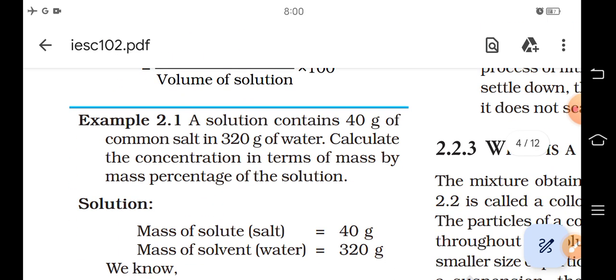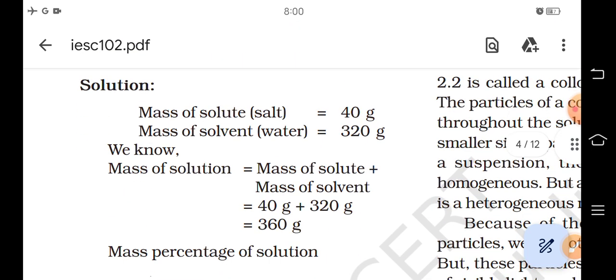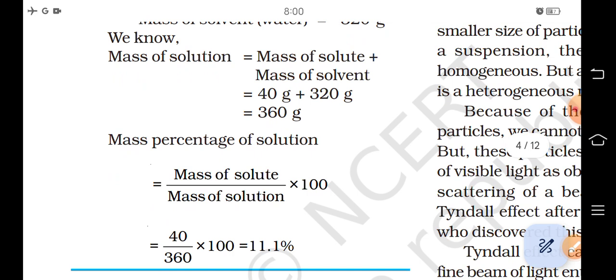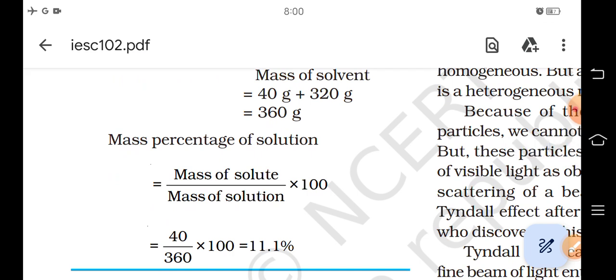Example 2.1: A solution contains 40 grams of common salt in 320 grams of water. Calculate the concentration in terms of mass by mass percentage of the solution. Mass of solute (salt) equals 40 grams. Mass of solvent (water) equals 320 grams. We know mass of solution equals mass of solute plus mass of solvent equals 40 grams plus 320 grams equals 360 grams. Mass percentage of solution equals mass of solute upon mass of solution into 100 equals 40 upon 360 into 100 equals 11.1 percent.